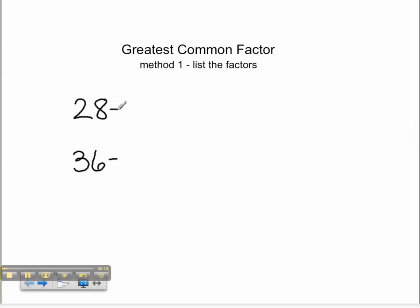We will first start by listing the factors of each of these numbers. The factors of 28 are 1, 2, 4, 7, and 28.